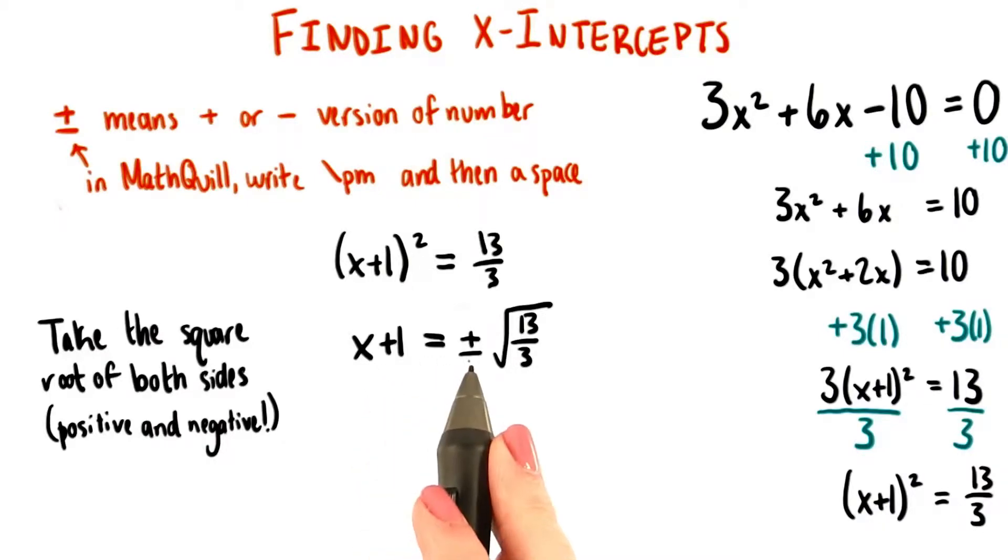We have x plus 1 equals plus or minus the square root of 13 over 3. Now you may be wondering why it doesn't look like I took the positive and negative versions of the square root of the left side of the equation.